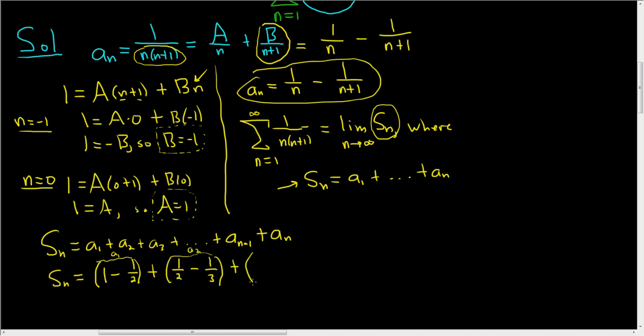So this here is a sub 3, plus dot dot dot, plus. Now we're going to plug in n minus 1, because we're looking for a sub n minus 1. So it's 1 over n minus 1, minus, and then replacing n with n minus 1 here. Well, n minus 1 plus 1 is just n. So we get 1 over n. So this term here is a sub n minus 1. And the last one is a sub n. So we already know what that is. It's 1 over n minus 1 over n plus 1.